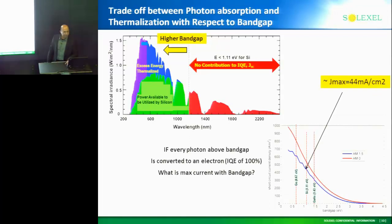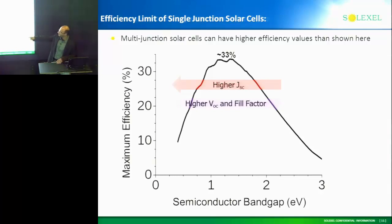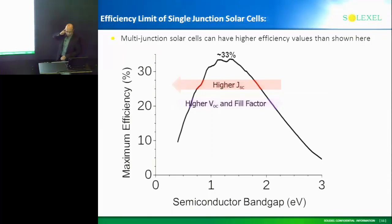This is the optimum you've all been waiting to see. Basically, this is the maximum efficiency as a function of bandgap. You can see that 1.42 eV for gallium arsenide is actually very close to the optimal.